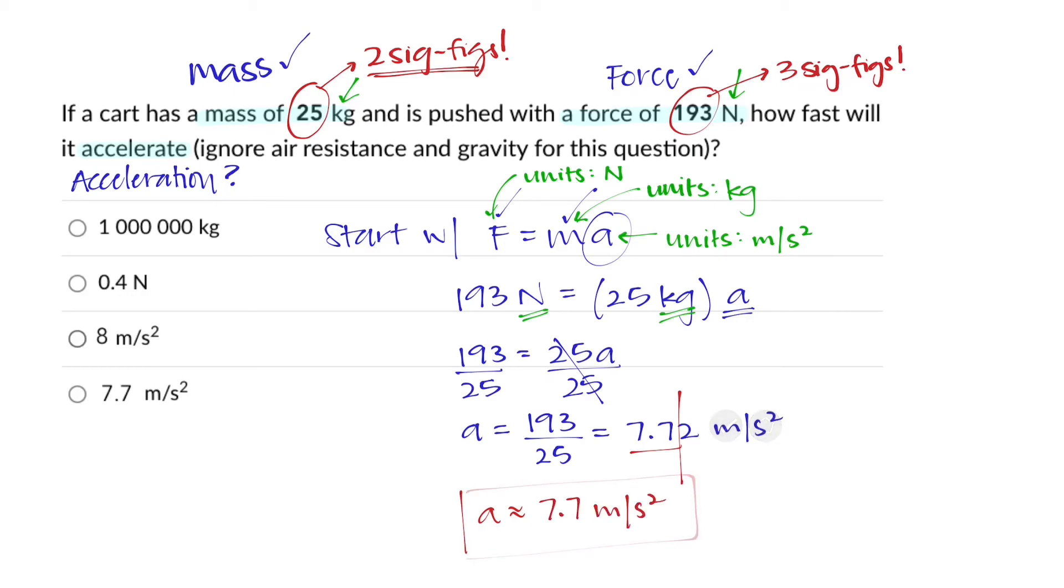Looking at our options, we have 1 million kilograms. That's not going to work. We've got 0.4 newtons. That's not going to work because those don't even have the right units either. This one's kilograms. This one's newtons. We are looking for something that has meters per second squared.